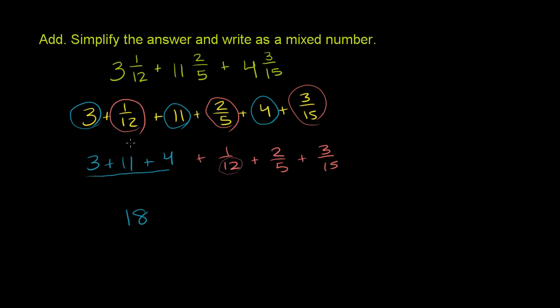If we take the prime factorization of 12, 12 is 2 times 6, and 6 is 2 times 3. So 12 equals 2 times 2 times 3.